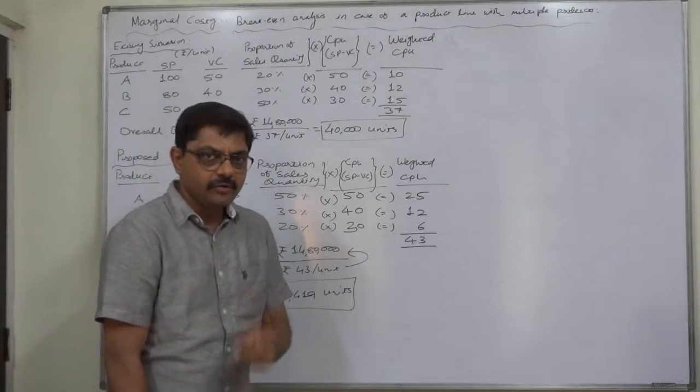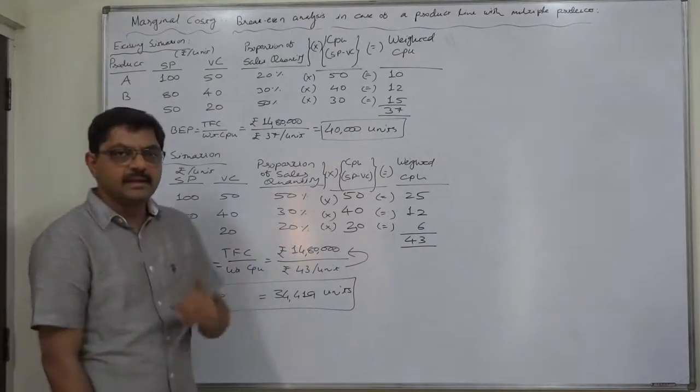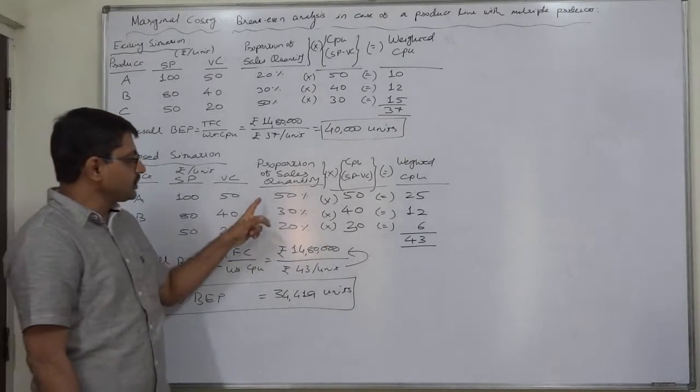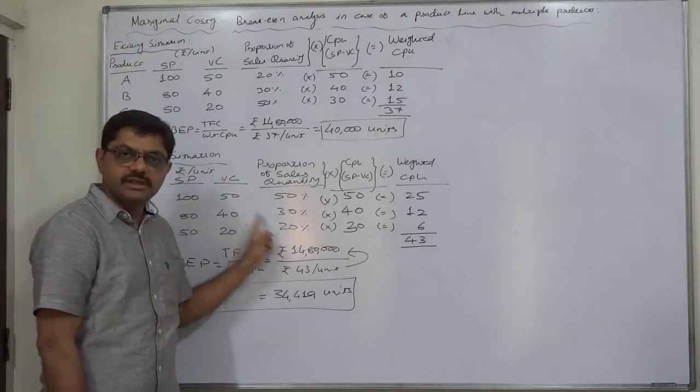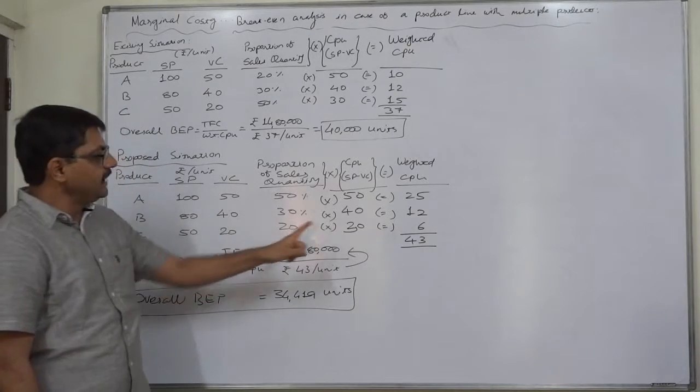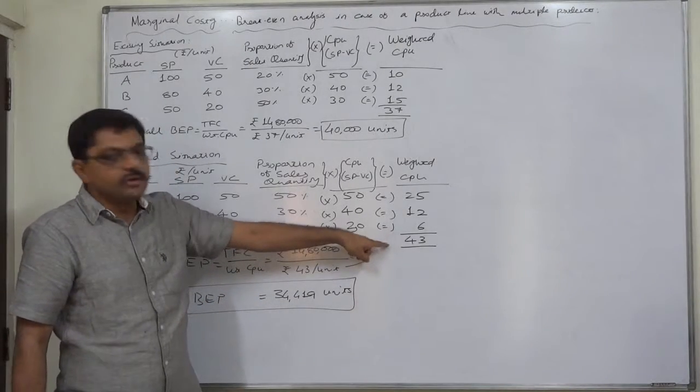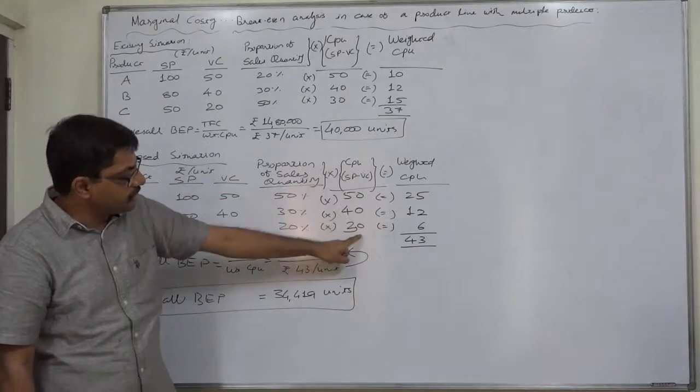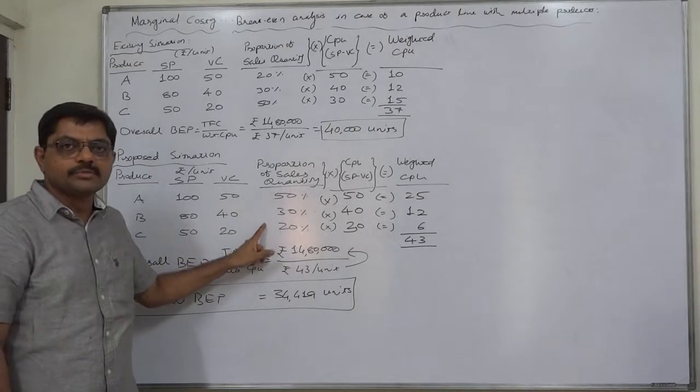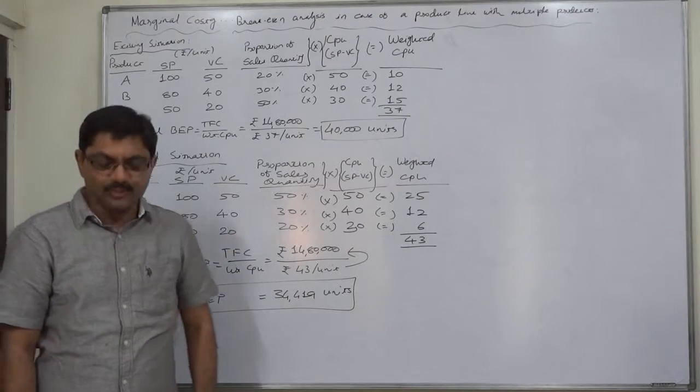But before leaving, I repeat the important point: when the information regarding percentage or proportion of sales quantity is available, we need to calculate weighted contribution per unit by multiplying the contribution per unit of each product by the percentage of sales quantity. Thank you very much.